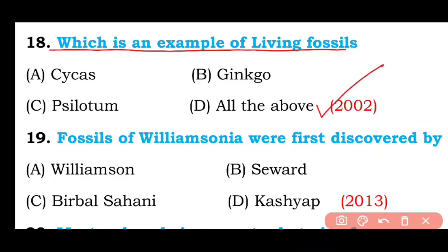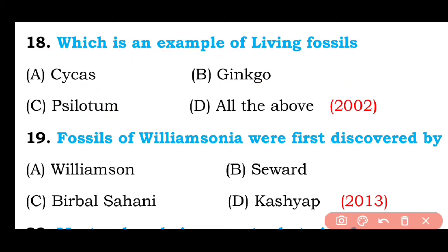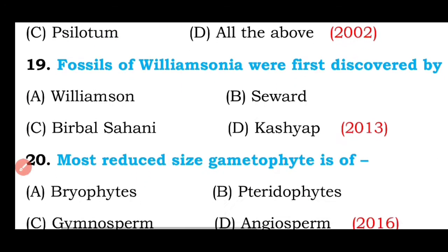Question number eighteen: Which is an example of a living fossil — Cycas, Ginkgo, Psilotum, or all of the above? The correct answer is option D — Cycas, Ginkgo, and Psilotum are all living fossils.